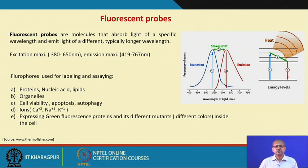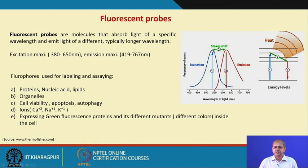What are fluorescent probes? A fluorescent probe has the property of absorbing light at high frequency and emitting light at a lower frequency — that is, at a longer wavelength. It has an excitation spectrum and an emission spectrum. For example, a fluorescent probe may show an excitation maximum around 540 nm and emit light in the visible range around 640 nm. This shift is called the Stokes shift.